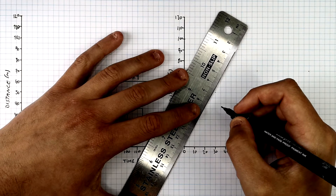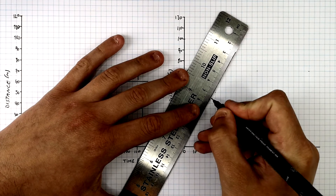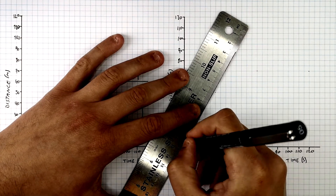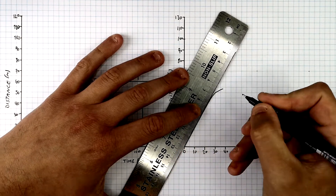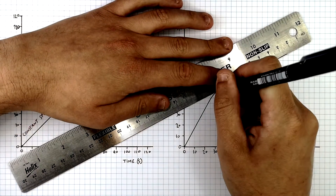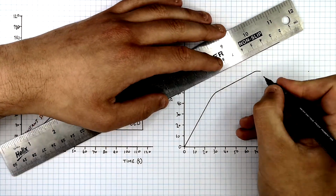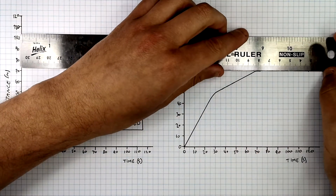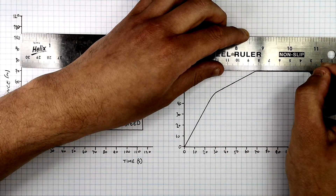So what I'm drawing here is a similar journey. If the first 30 metres has got a steady speed, and then there is going to be a decrease in speed in the second part of the journey, then the object will end up being stationary for the final part of the journey as seen here.